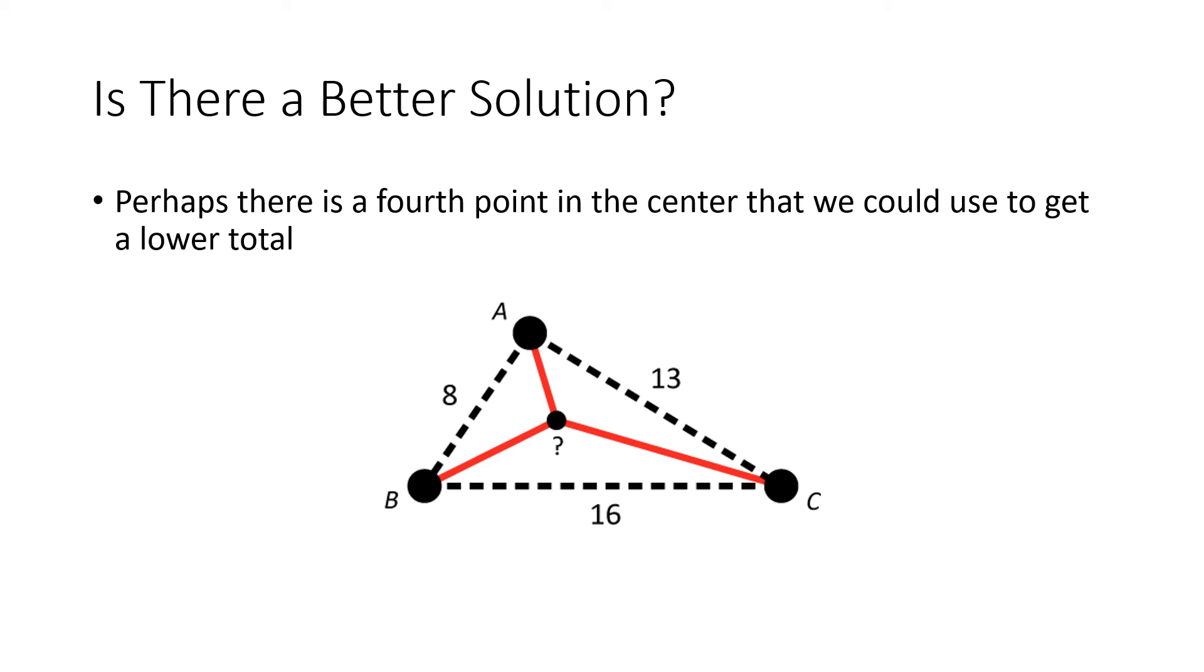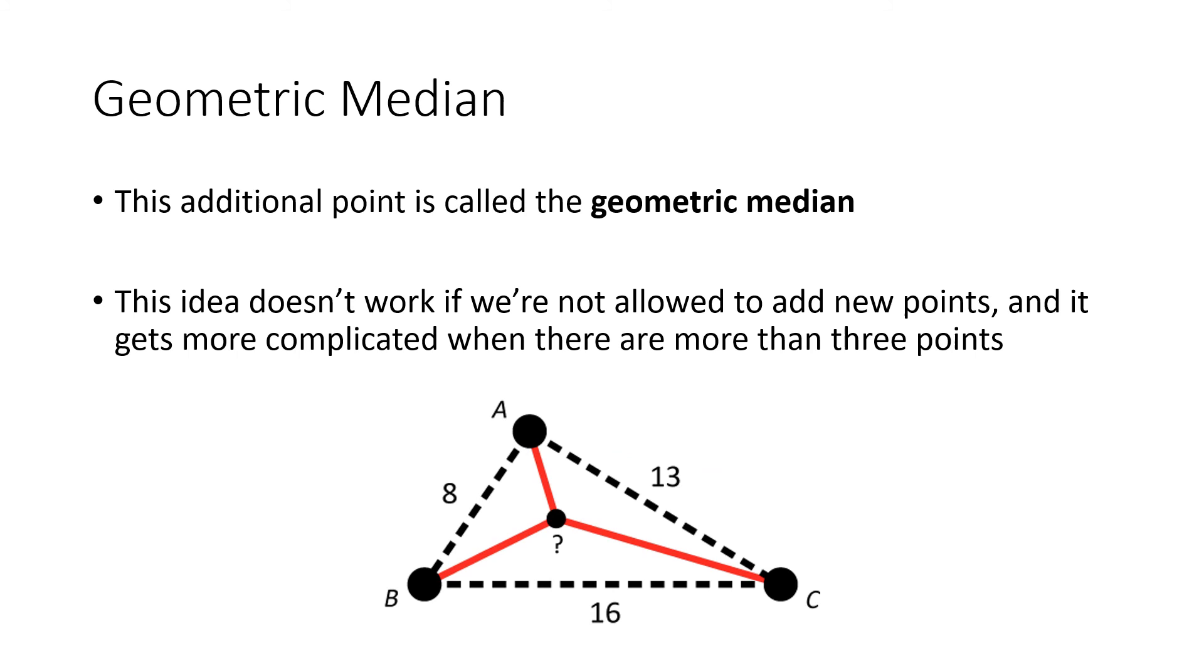But sometimes there might be a fourth point in the middle, located in the center of the triangle, where the total of the three distances would be less than 21 from taking 8 and 13. If we can invent this fourth point, it's called the geometric median—the point with minimum total distance from the three existing points.